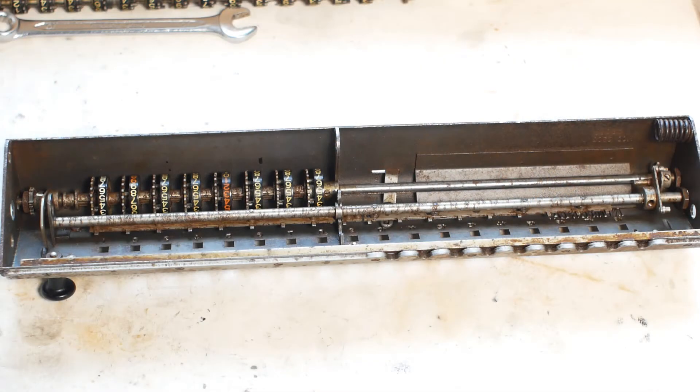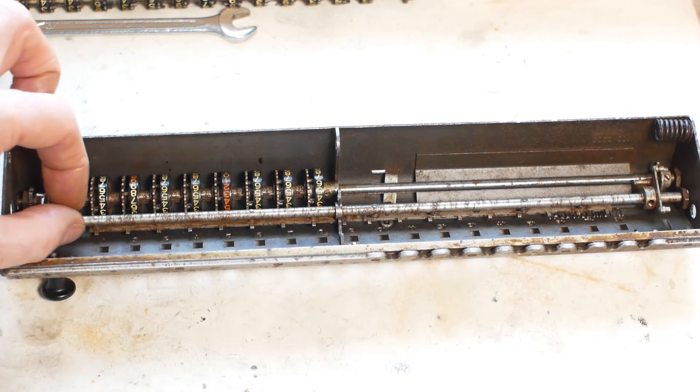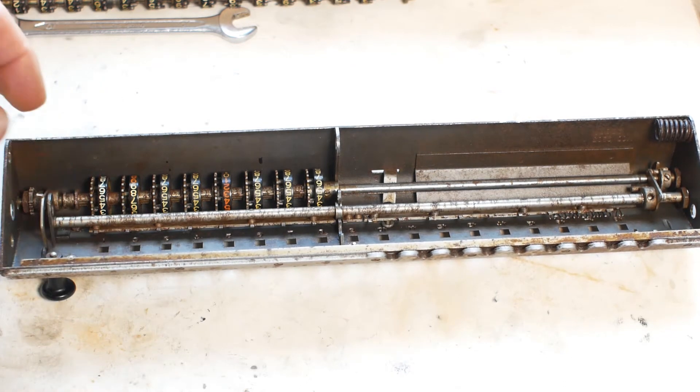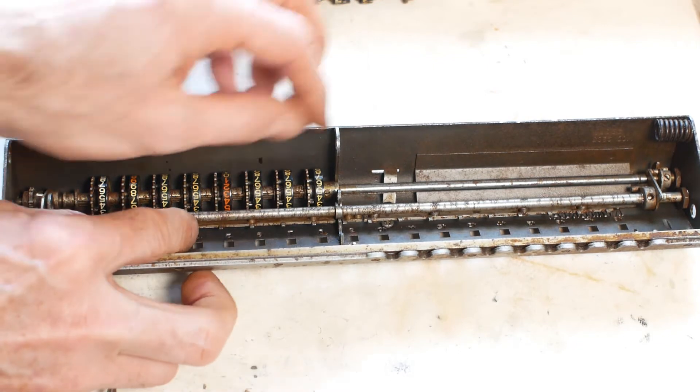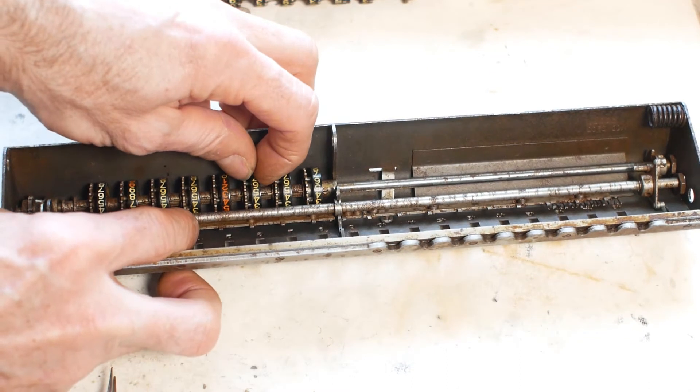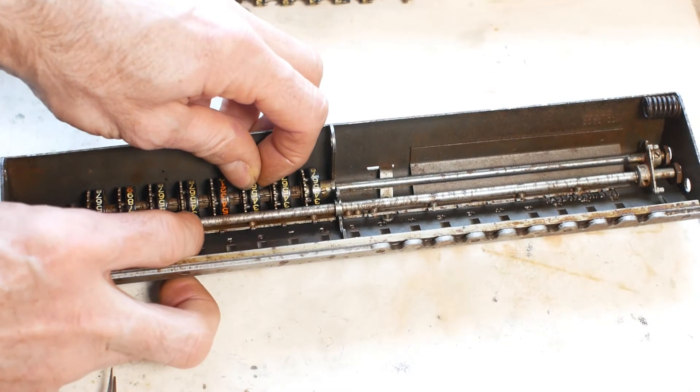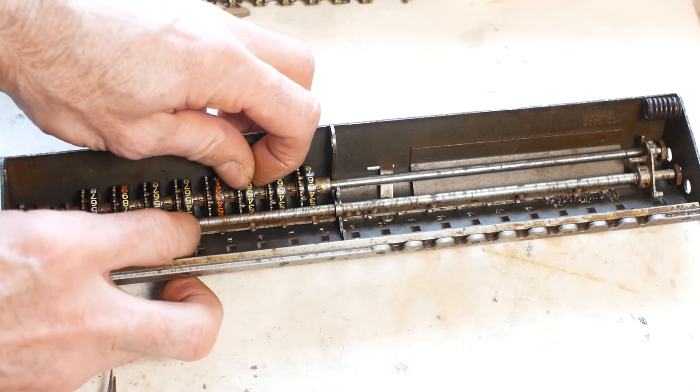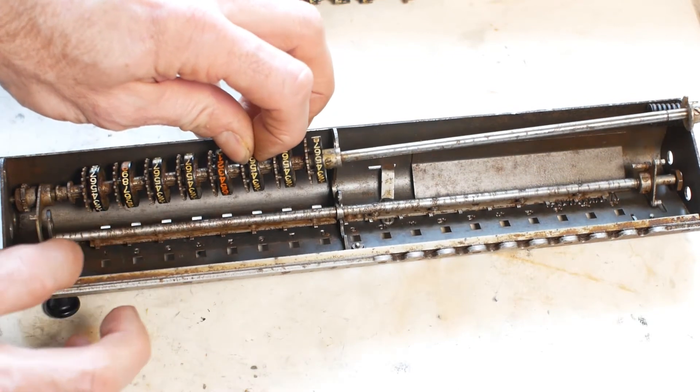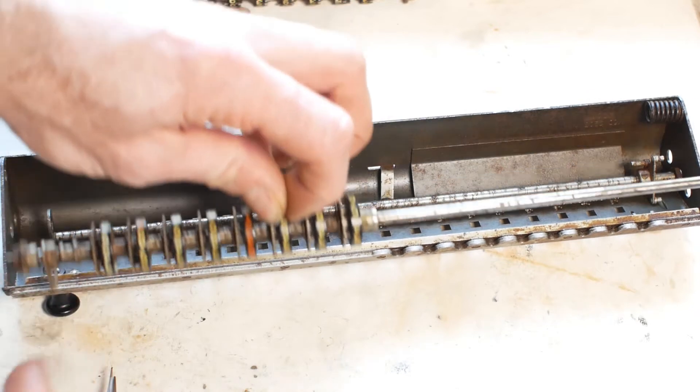After all that, we're finally ready to take the countershaft out. You just need to rotate the rocker shaft away from yourself, so the little fingers aren't between the number wheels of the counter. Make sure the rocker assembly on the end of the shaft is out of the way. Now you should be able to slide the countershaft far enough to the left to release the centre bearing from the carriage chassis, and lift the countershaft out from the right-hand end.